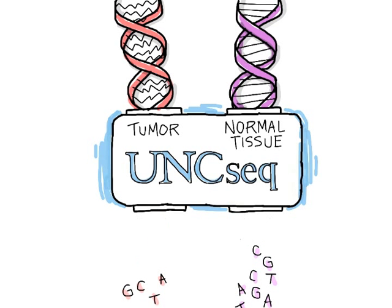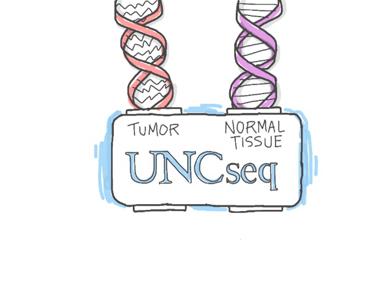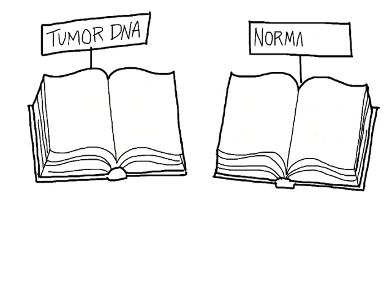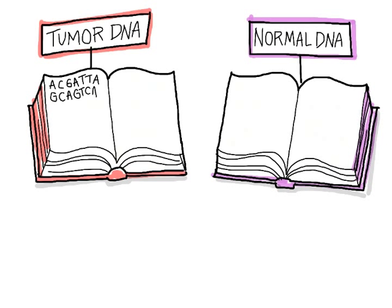After sequencing, we have two gigantic books of DNA sequence. One is the tumor's DNA and the other is the patient's normal DNA. Although the captured DNA is much smaller than the patient's entire genetic sequence, each book is still several million letters long.